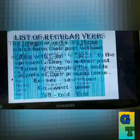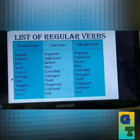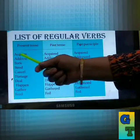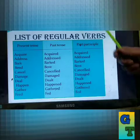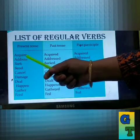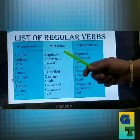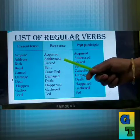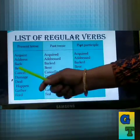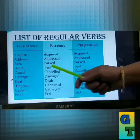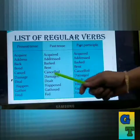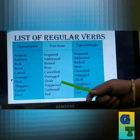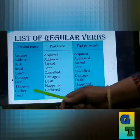Now I am giving you a list of regular and irregular verbs. You have to learn this list and you will get more knowledge about these verbs. See the present tense of 'acquire' — in the past form it becomes 'acquired'. 'Address' becomes 'addressed'. 'Bark' changes to 'barked'. 'Bend' changes to 'bent'. 'Cancel' stays 'cancelled'. 'Damage' becomes 'damaged'. 'Deal' becomes 'dealt'. 'Happen' becomes 'happened'. 'Gather' becomes 'gathered'. 'Feed' becomes 'fed'.